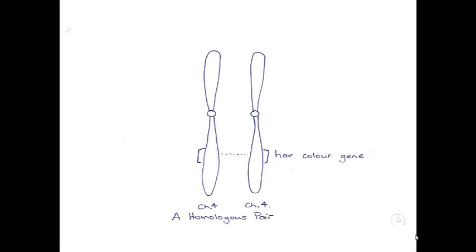So here are our two chromosomes. I've chosen to call them chromosome 4. I've emphasised that they're a homologous pair and therefore they both have the hair colour gene in the same place.